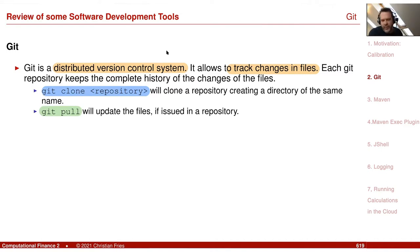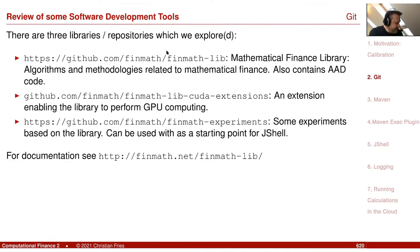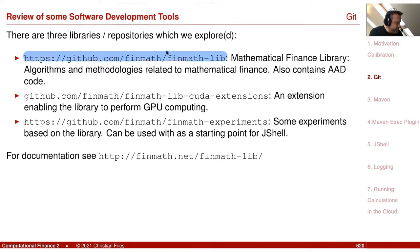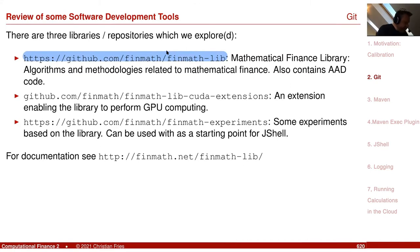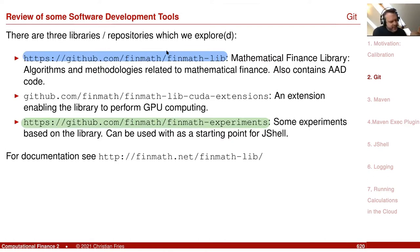Git is also useful if you work with remote machines — having your stuff organized in a Git repository. In the lecture, we already have a few repositories: the library can be found in one repository, I also have a repository on the GPU extension which we might explore in a future session. There's also an experiments repository, which actually references the library as a dependency but also comes with some other useful stuff and we can use it as a starting point.